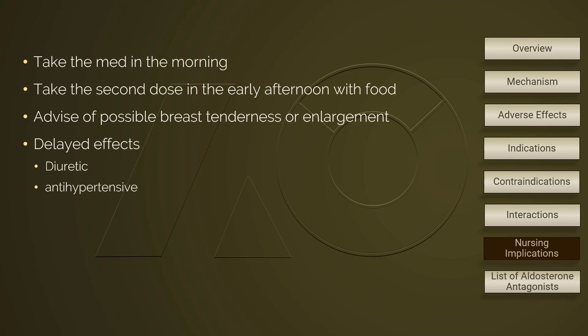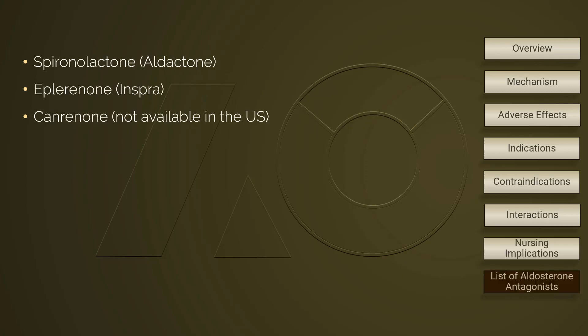An aldosterone antagonist produces diuresis; therefore, medications from this group are best taken in the morning to avoid nocturia. If there is a second dose, it is better to take it in the early afternoon with food. Patients should be advised of possible breast enlargement or tenderness caused by the sexual hormone-like effect. The diuretic effect occurs in two to three days, but the maximum antihypertensive effect occurs in two weeks. Among aldosterone antagonists, kerenone is not available in the United States.